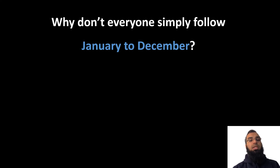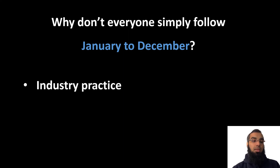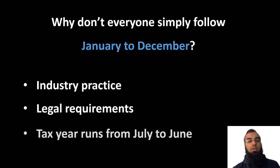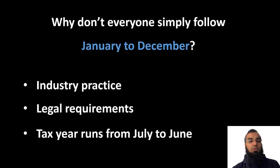You may have a question: why doesn't everyone simply follow an accounting year from January to December? Sometimes it is industry practice — for example, in some countries the automobile industry follows April to March. Sometimes it is a requirement of the law — central banks usually require banks to follow January to December. Sometimes people want to synchronize their tax year with the accounting year, and the tax year usually follows July to June, so the same profit figure can be used for calculating tax.